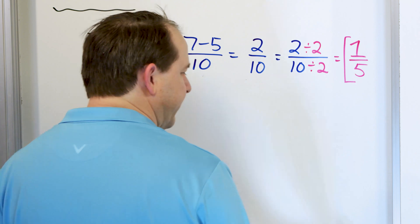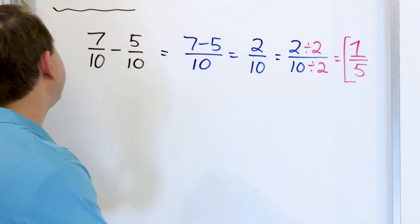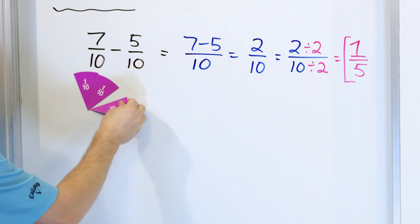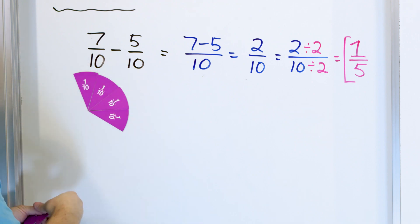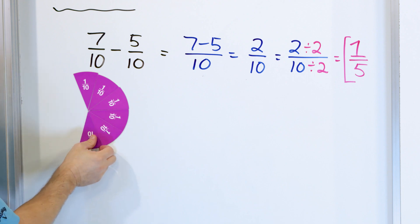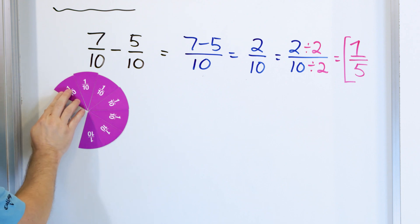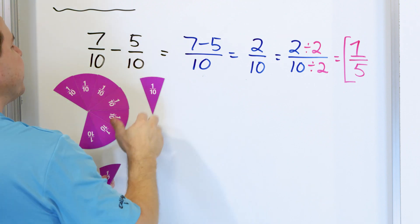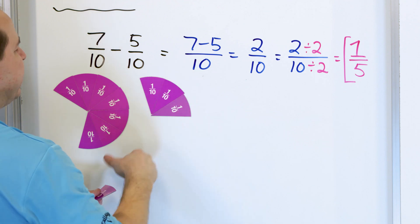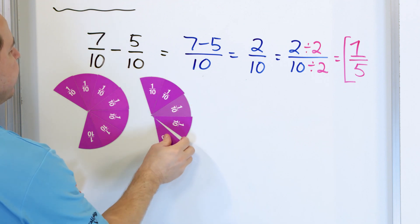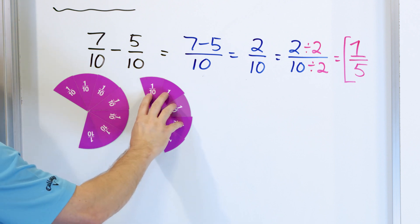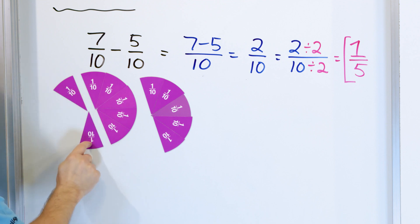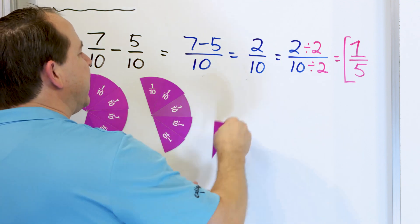Let's make sure this problem makes sense. So what do we start with? We start with 7 tenths. There's my pizza cut into tenths — 1 tenth, 2 tenths, 3 tenths, 4 tenths, 5 tenths, 6 tenths, and there is 7 tenths. So 7 slices when they are cut into tenths. And then I'm subtracting 1 tenth, 2 tenths, 3 tenths, 4 tenths, 5 tenths. So I'm starting with this amount of pizza and I'm taking away this much. What do I have left? Only two slices left.